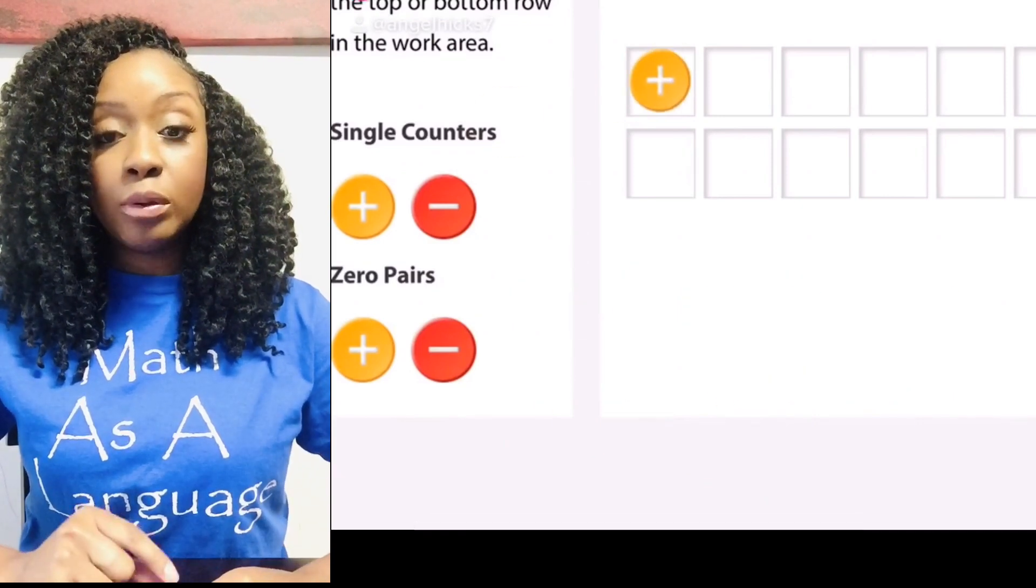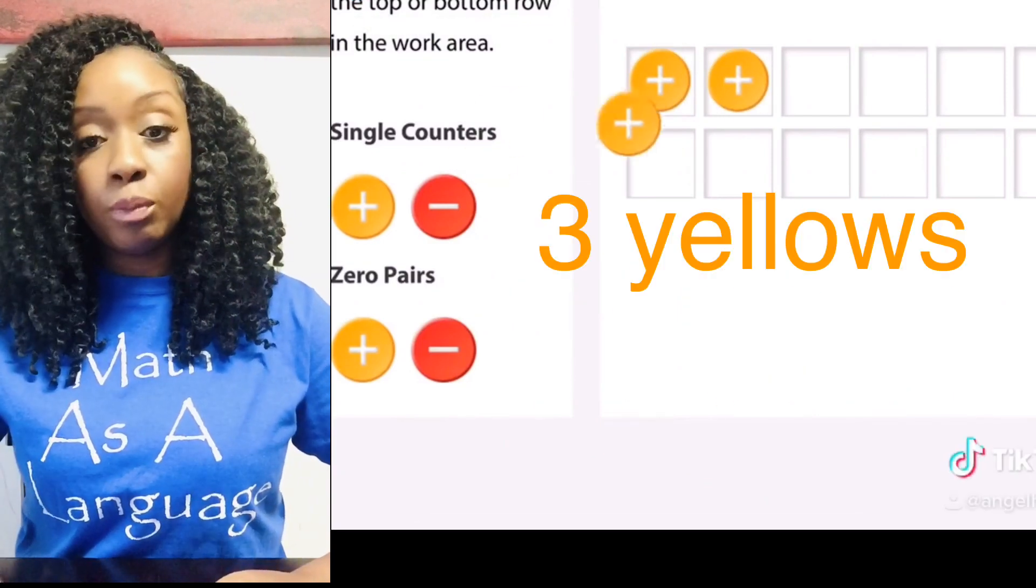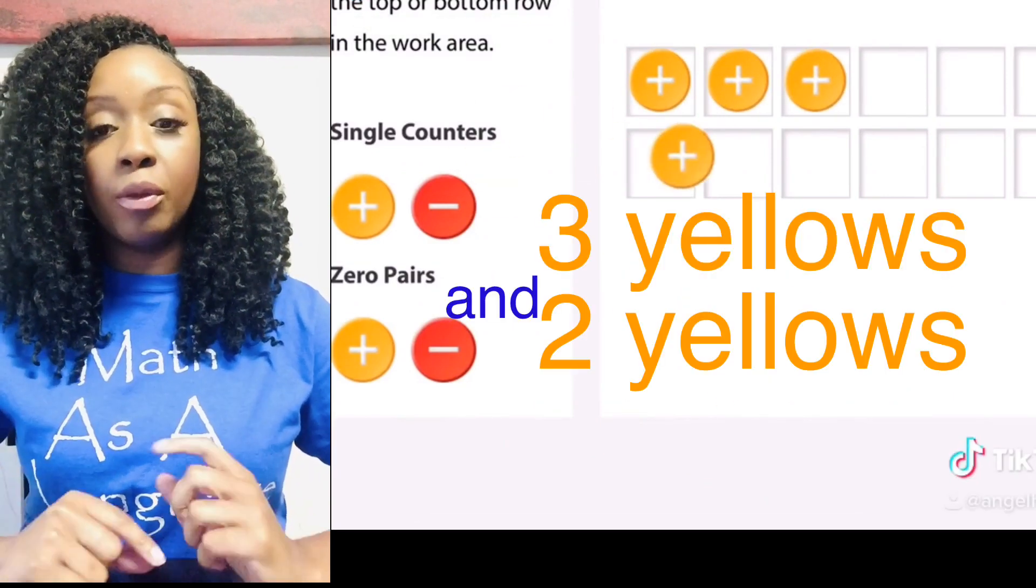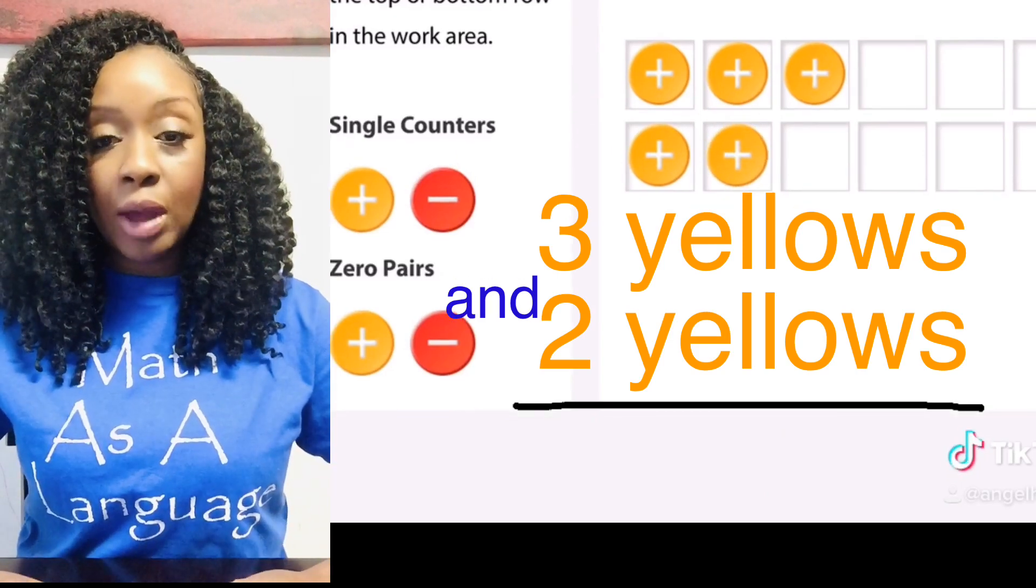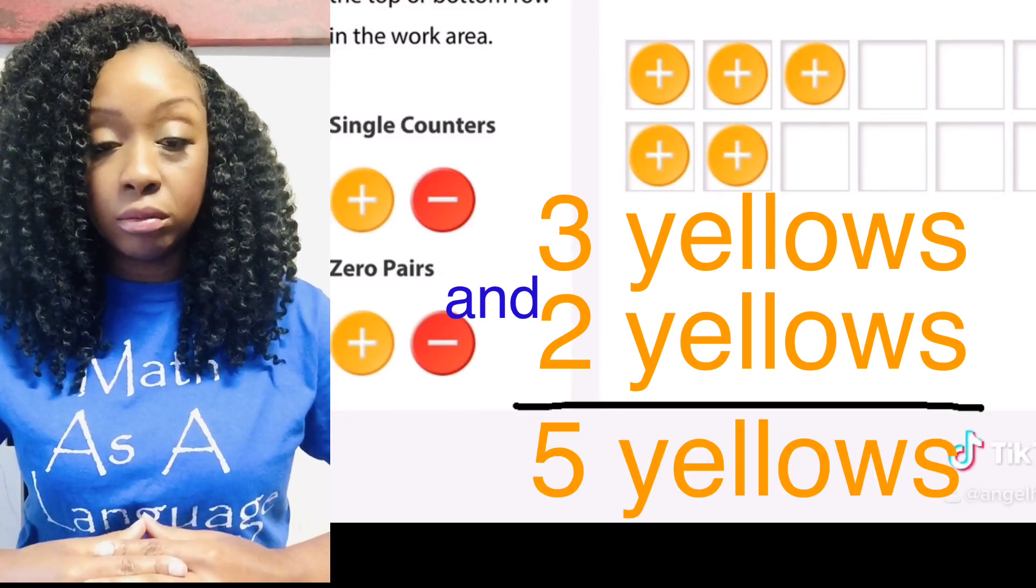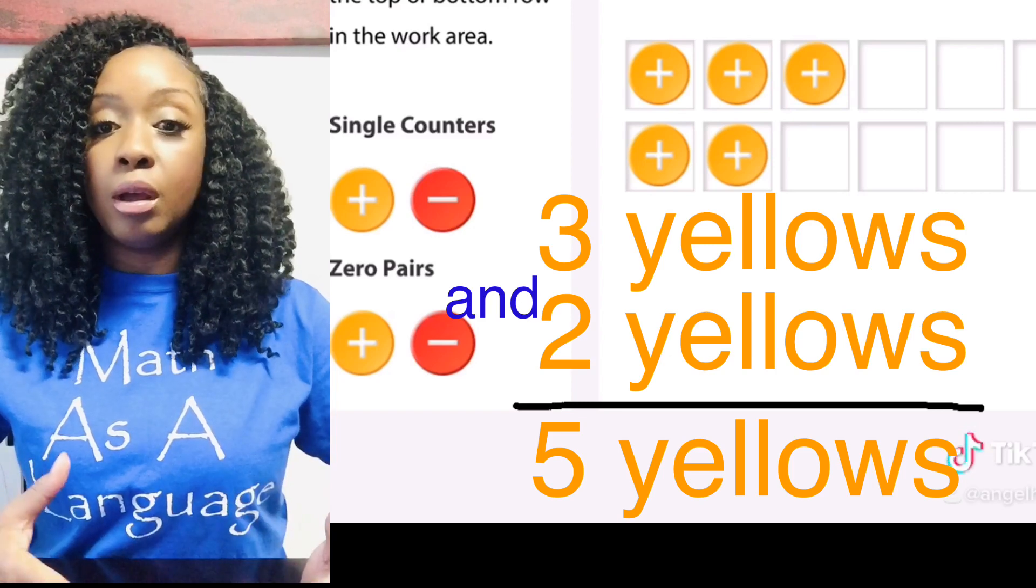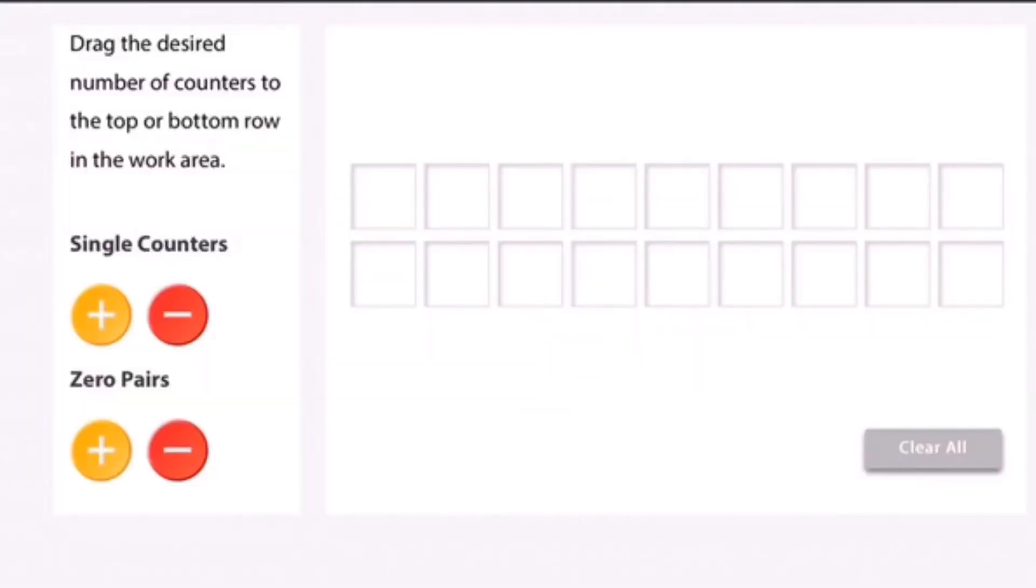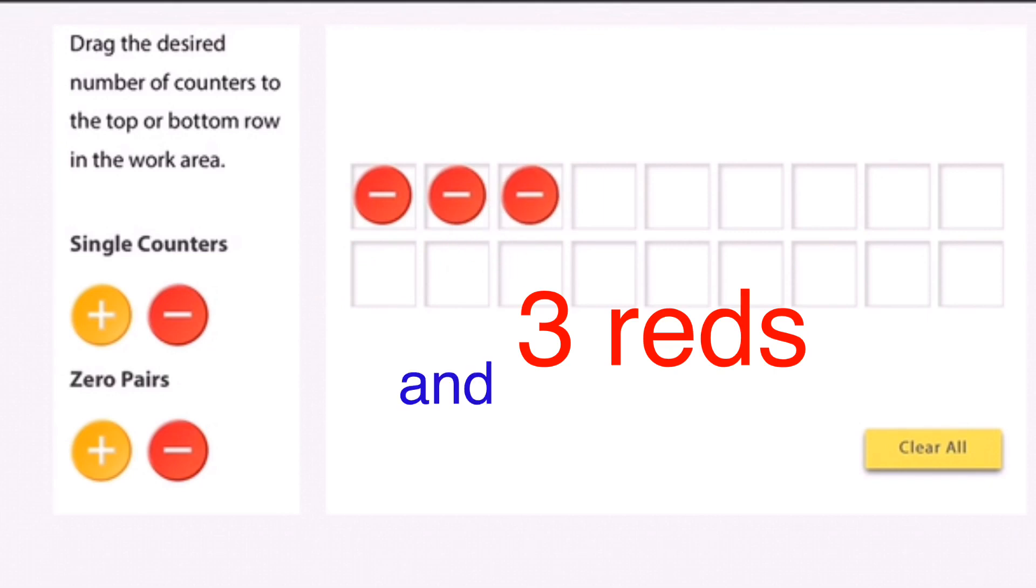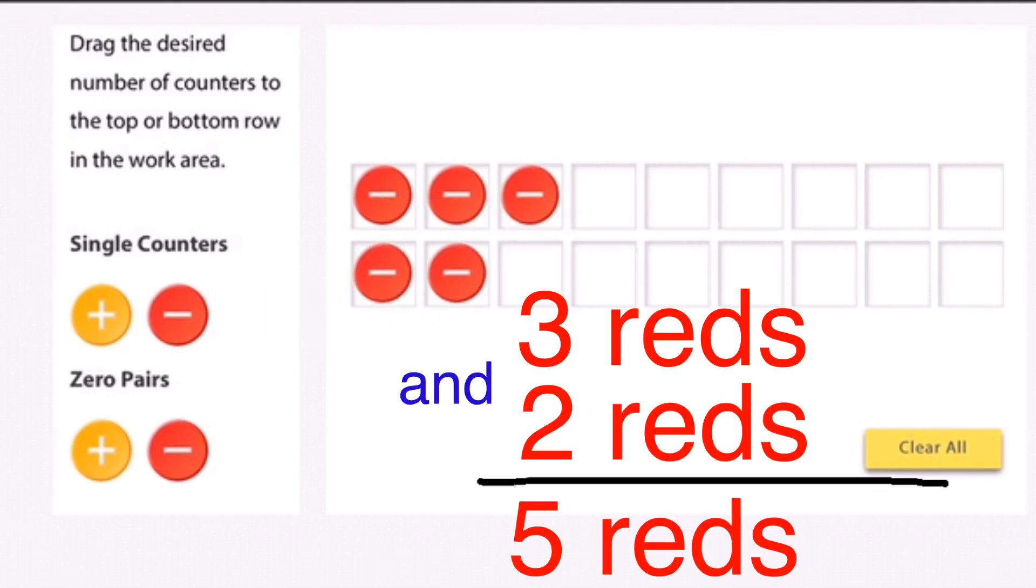For example, if I were to put three yellow and two yellow on the board here together I will have a total of five yellow, which means my answer is positive five. Or if I have three reds and two reds that will give me a total of five reds.